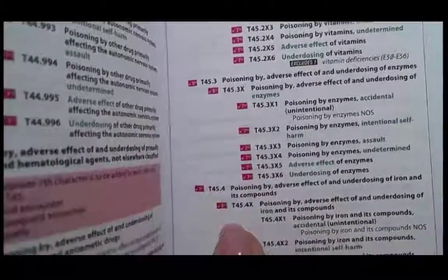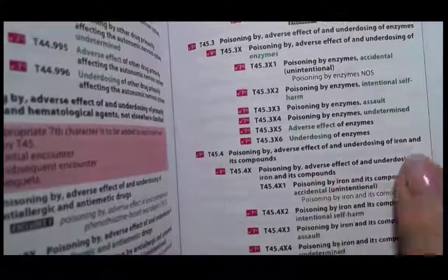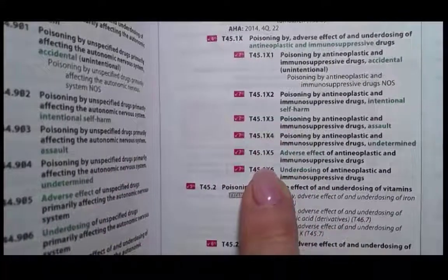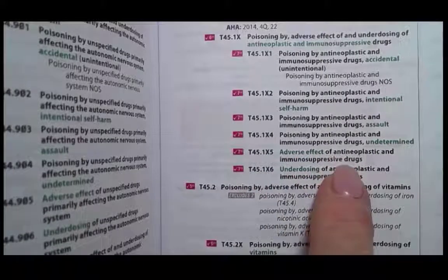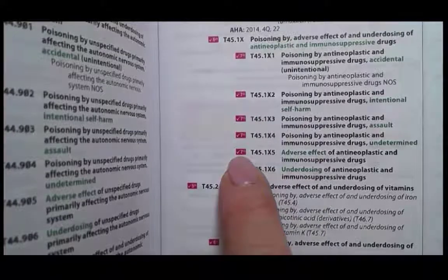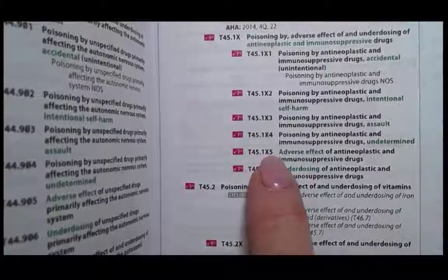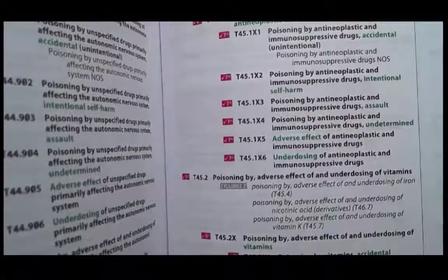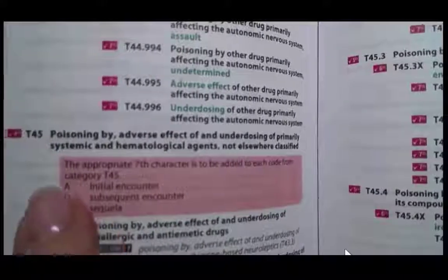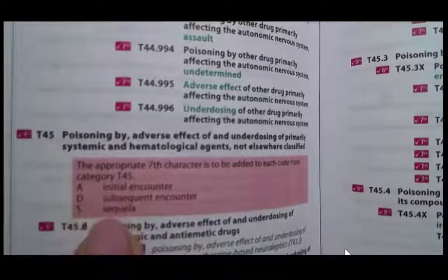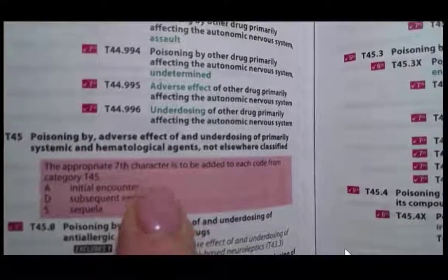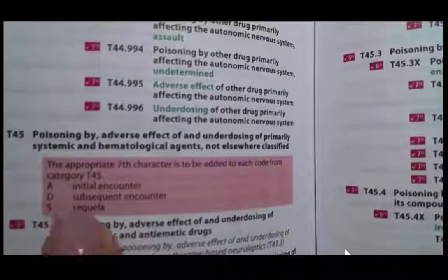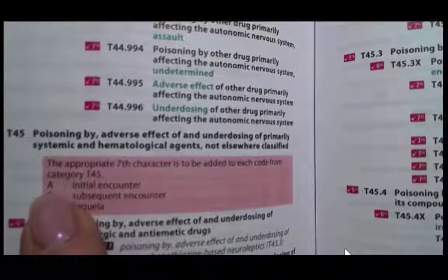Here we are in the tabular at T45.1X — adverse effect of antineoplastic and immunosuppressive drugs. Seven characters are needed. Going to the front of this chapter, Chapter 19, at the beginning of the T45 category, the instructional note says the appropriate seventh character must be added to each code from category T45: A for initial encounter, D for subsequent, and S for sequela. Our medical record documentation tells us it is an initial encounter, so our seventh character is A — making the complete code T45.1X5A.